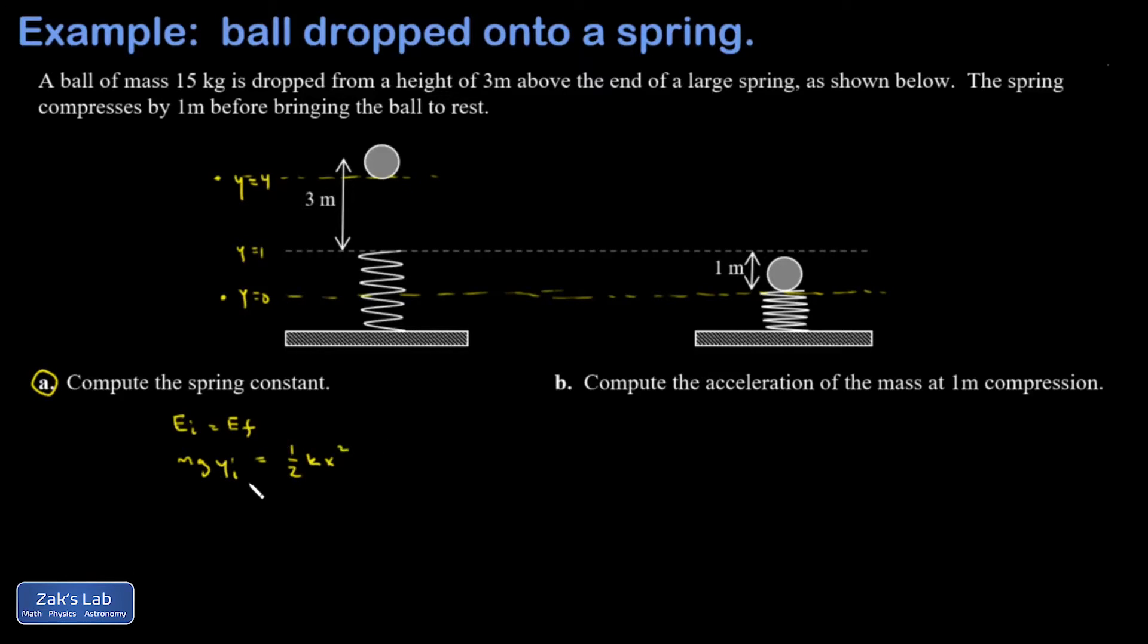Okay, so I know the compression distance, I know the initial height, I know g of course, and I know the mass. So the only unknown there is the spring constant. I'll go ahead and plug everything in: 15 kilograms, 9.8 meters per second squared, initial height of 4 meters.